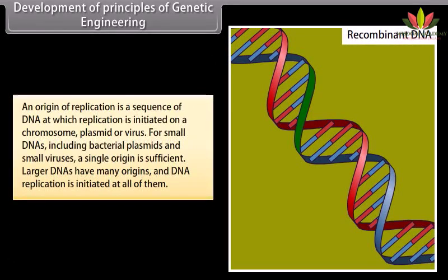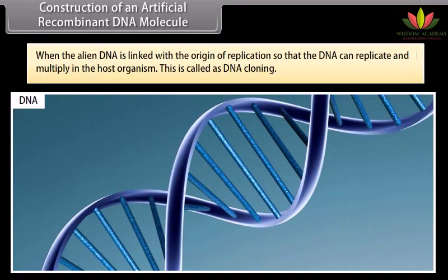The host DNA combined with foreign DNA or artificial DNA is called recombinant DNA. An origin of replication is a sequence of DNA at which replication is initiated on a chromosome, plasmid, or virus. For small DNAs, including bacterial plasmids and small viruses, a single origin is sufficient. Larger DNAs have many origins and DNA replication is initiated at all of them. When the alien DNA is linked with the origin of replication so that the DNA can replicate and multiply in the host organism, this is called DNA cloning.